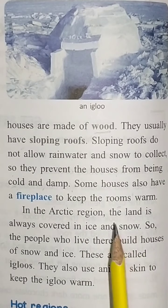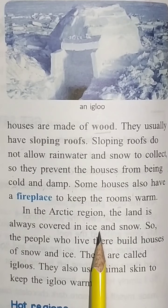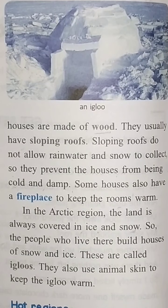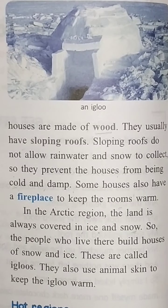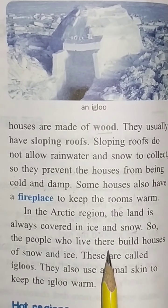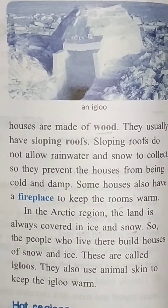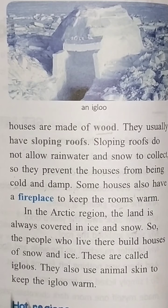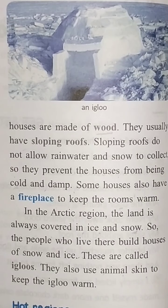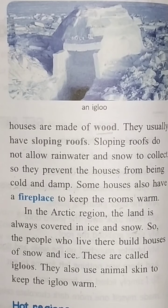In the arctic region, the land is always covered in ice and snow. Arctic region mein zyada tar zameen jo hai, snow or ice se covered hoti hai. So the people who live there build houses of snow and ice. Isi liye in jagah ke log apna ghar snow and ice bricks se banate hain. These are called igloos. Is tarah ke gharon ko hum igloos kehte hain. They also use animal skin to keep the igloo warm. Woh log janwaron ke chamde ko us ke andar rakhte hain, taaki unka igloo garam raha sake.